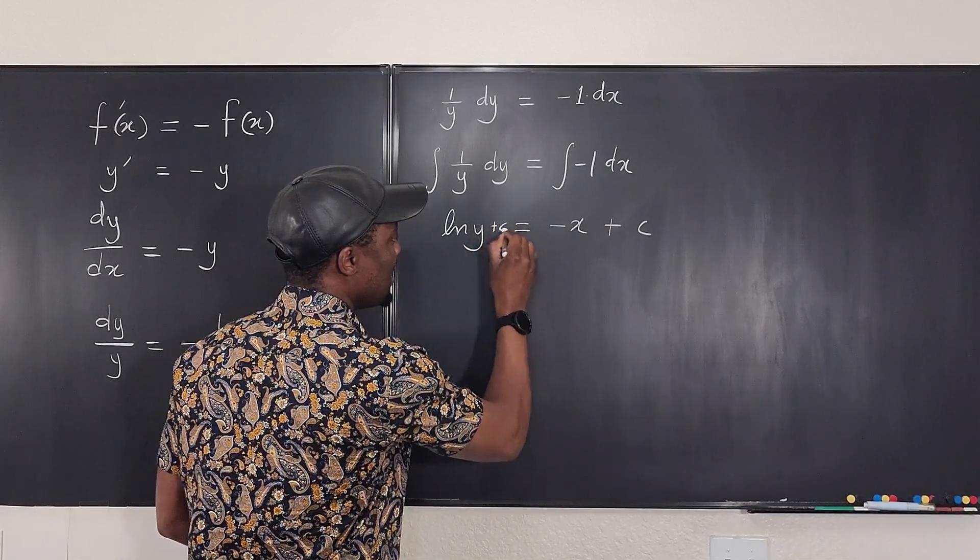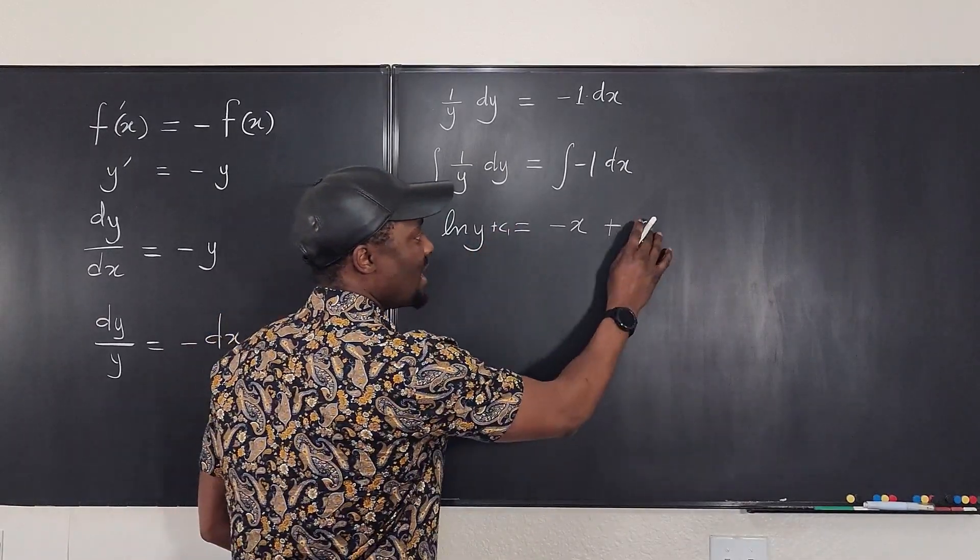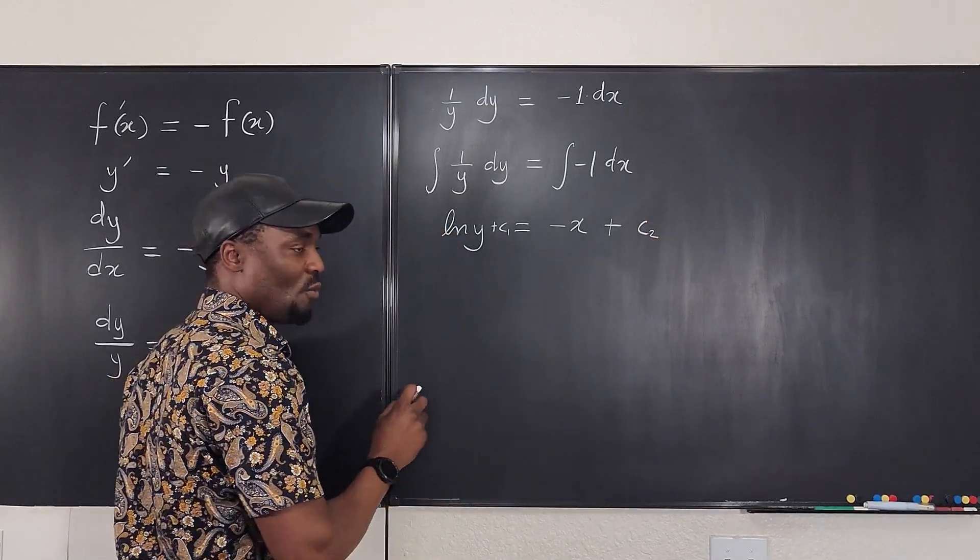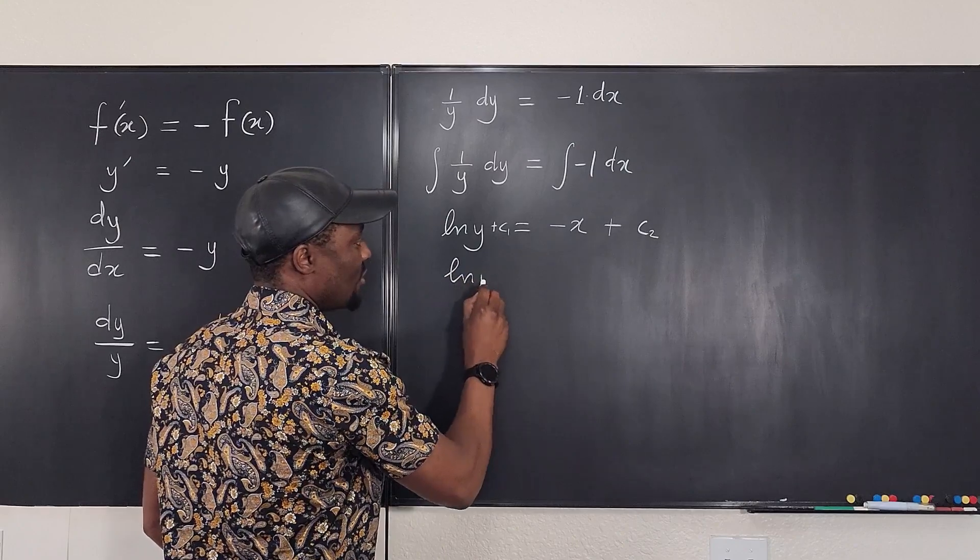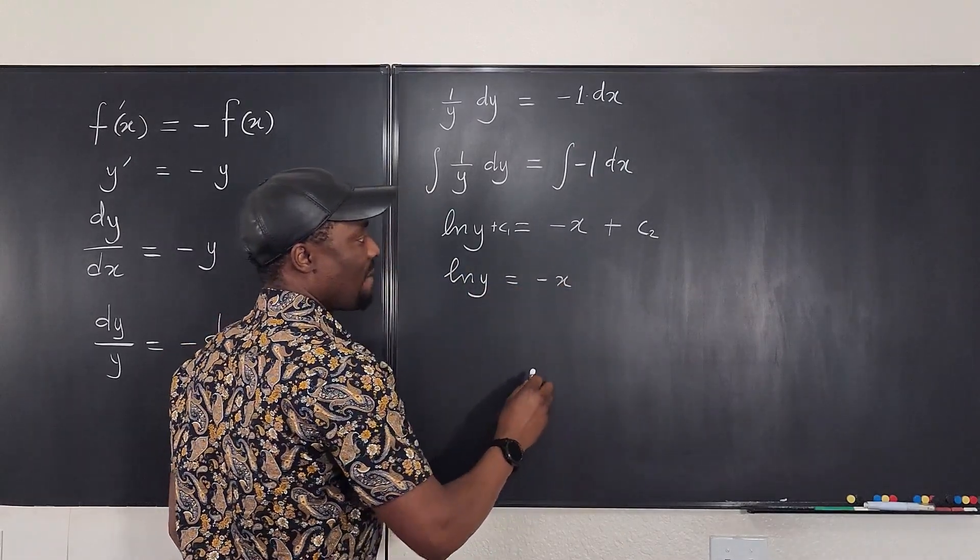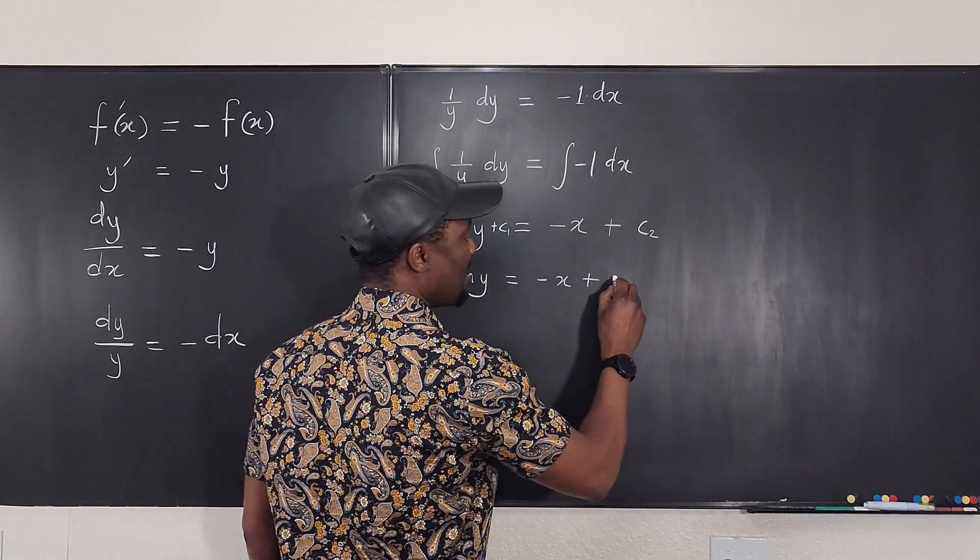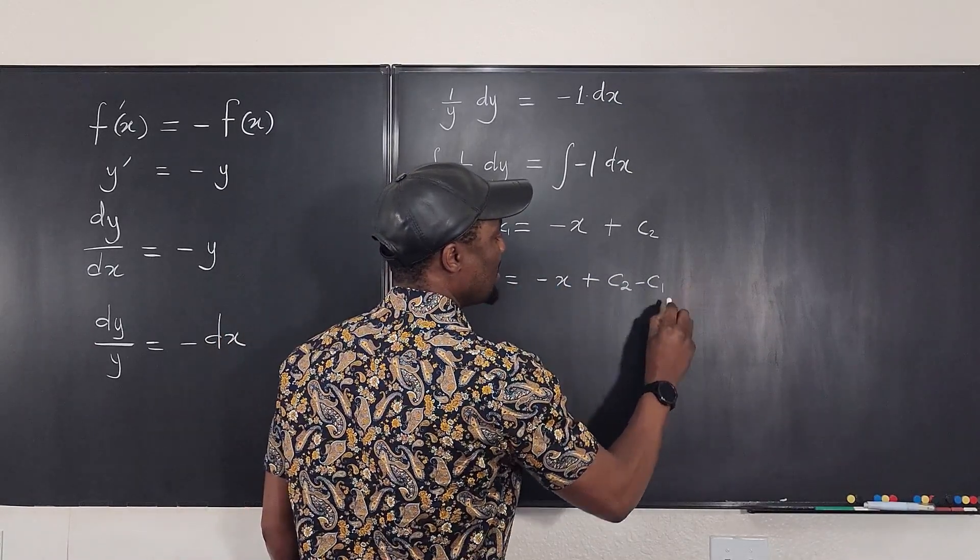So, let's say I say plus c, and I call this c1, then it means I have to call this c2. Okay, so, watch what happens. The natural log of y will be negative x plus, if I move this here, it's going to become c2 minus c1.